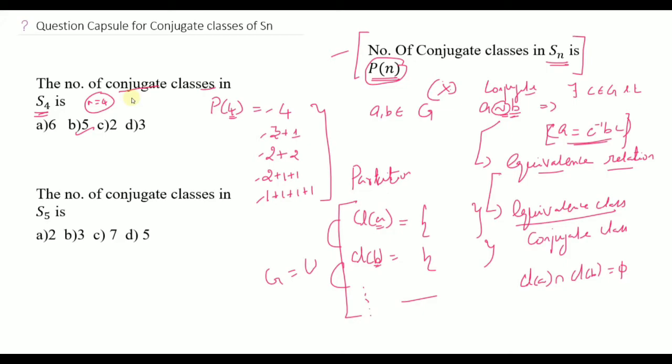Now for the number of conjugate classes in S5: here N is equal to 5. So we need P(5), which is the number of partitions of 5.